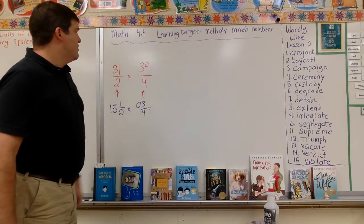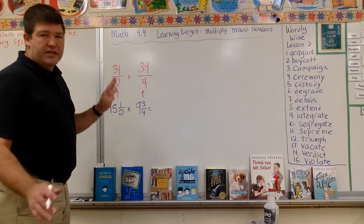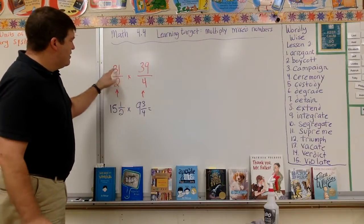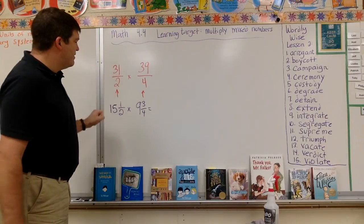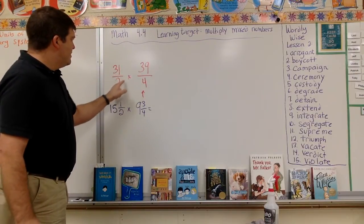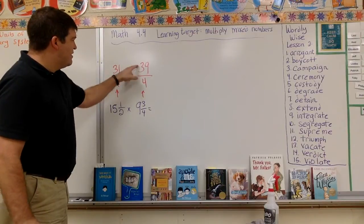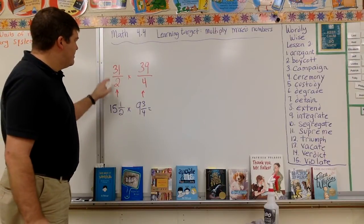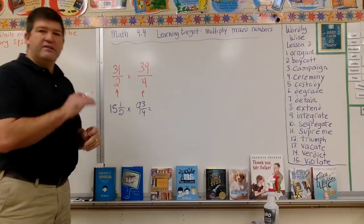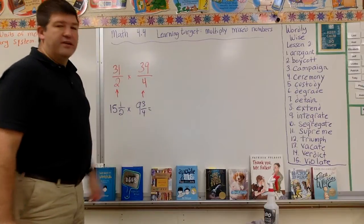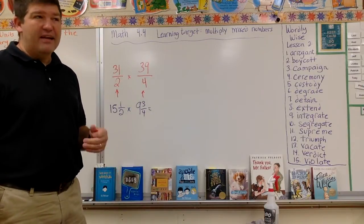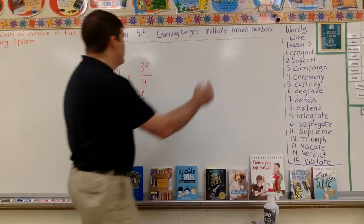Thirty-one times thirty-nine. Well, let me just check to see. Thirty-one and four, those can't be simplified. Thirty-nine and two, those can't be simplified. These can't be simplified. So I just have to go across. Thirty-one times thirty-nine. I can't do that in my head. That's not just a simple math fact. So I come over here.